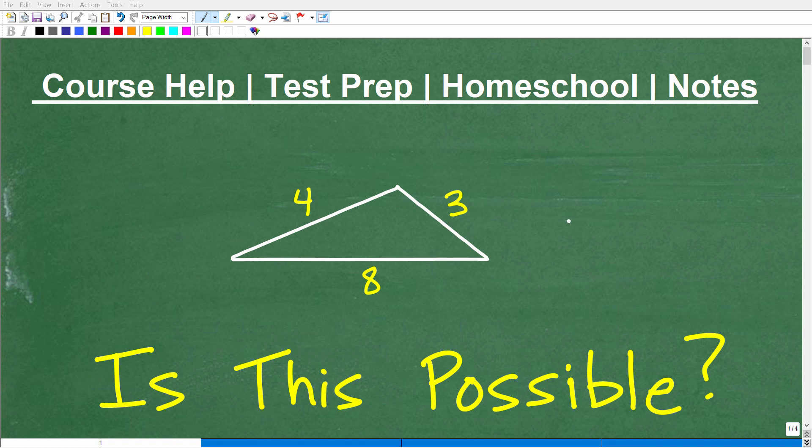Okay, let's tackle this problem right here. So we have a triangle and it has lengths 4, 3, and 8. And I'm asking, is this possible? Could we actually have a triangle with these lengths?